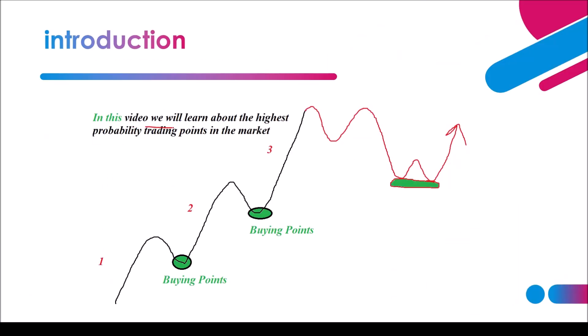In this video we'll learn about the highest probability trading points within the markets. This is an illustration of how the market works — it moves with swings or pushes whereby three pushes lead us to a reversal, and all the connectors of two levels are the highest probability points of entry. However, you need to know how to derive the war cycle, and that is the sole reason of this video.